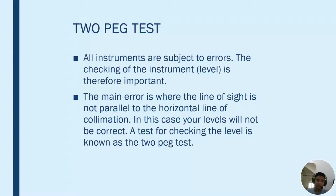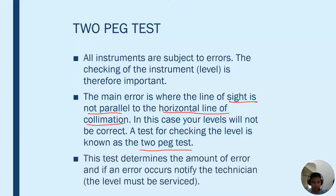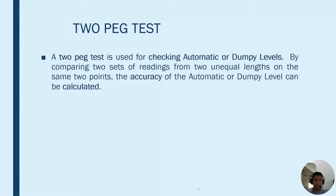The main error that happens in a level instrument is where the line of sight is not parallel to the horizontal line of sight of collimation. In this case our levels are not correct, and there is a test we use in checking the level called the Two-Peg test. This test determines the amount of error, and if an error occurs we have to notify the technician for that instrument.